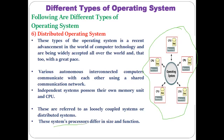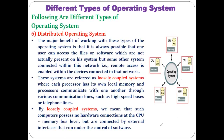The processors in different computers may have different sizes and different functions; it is not required that every processor connected to this central operating system have the same configuration. Each CPU or processor may have a different configuration and size. One major benefit of this kind of operating system is that even if you have files or important information stored centrally, it can be easily accessed by other computers — there is no need for every computer to store that particular information.